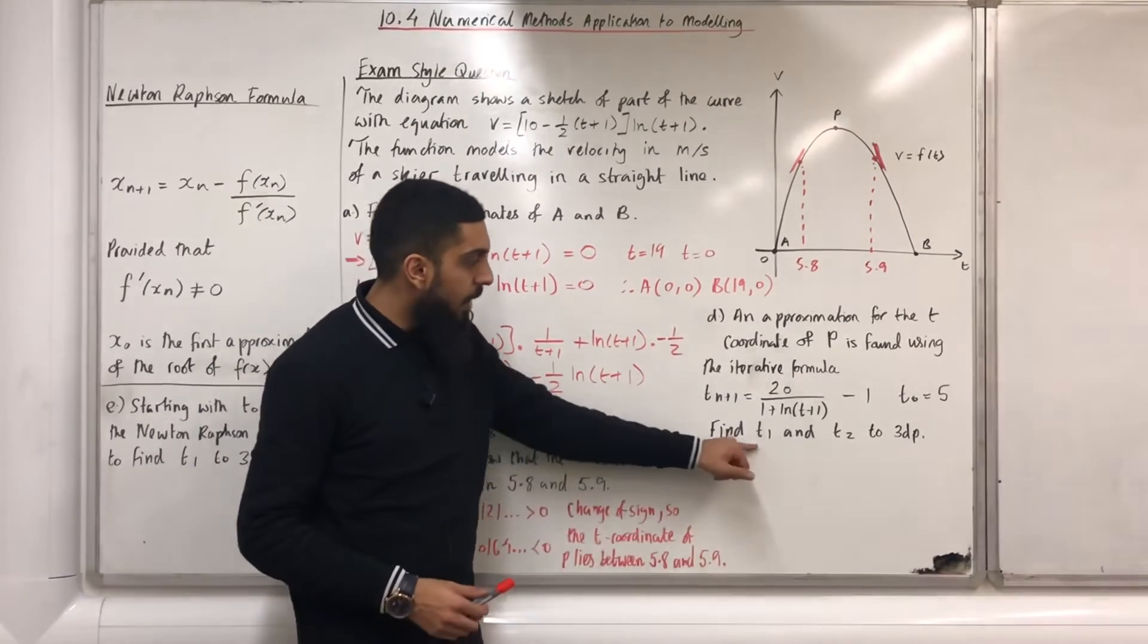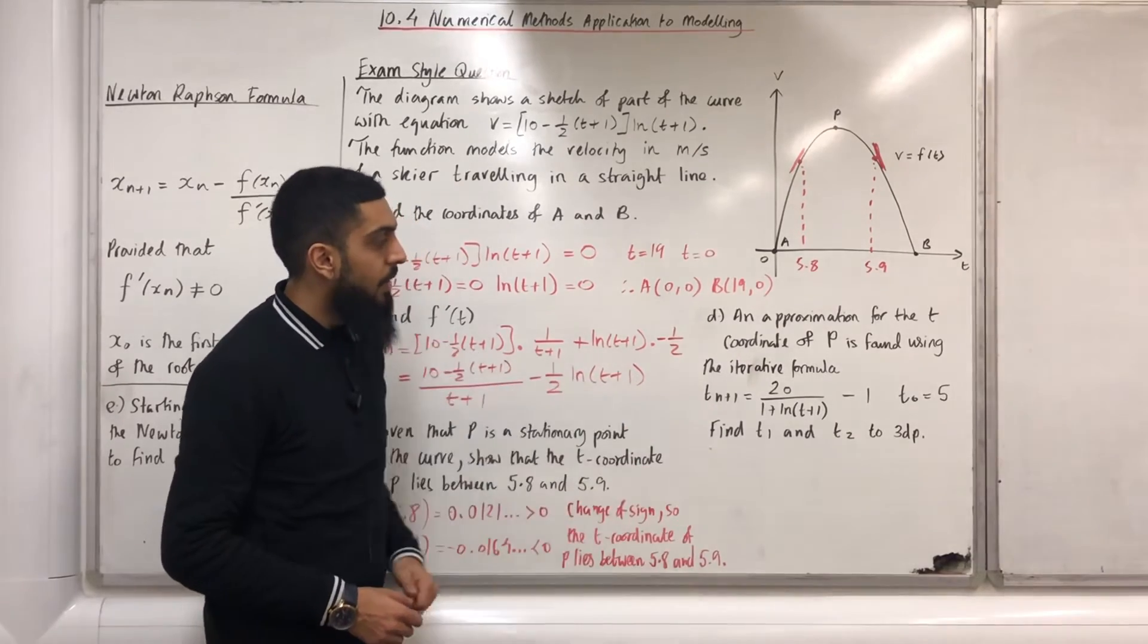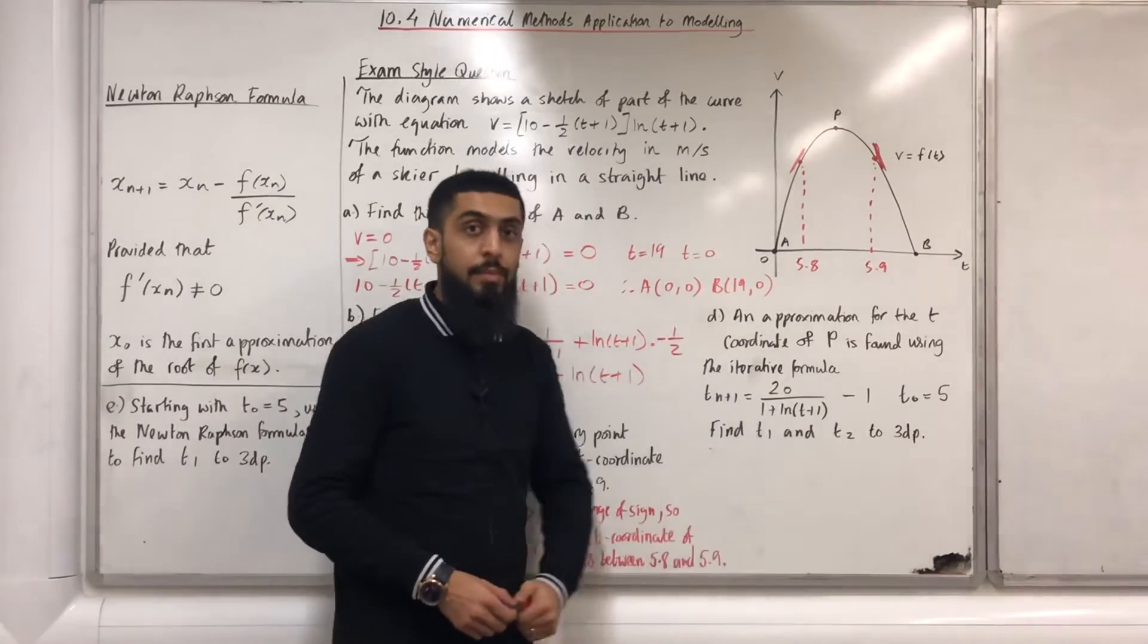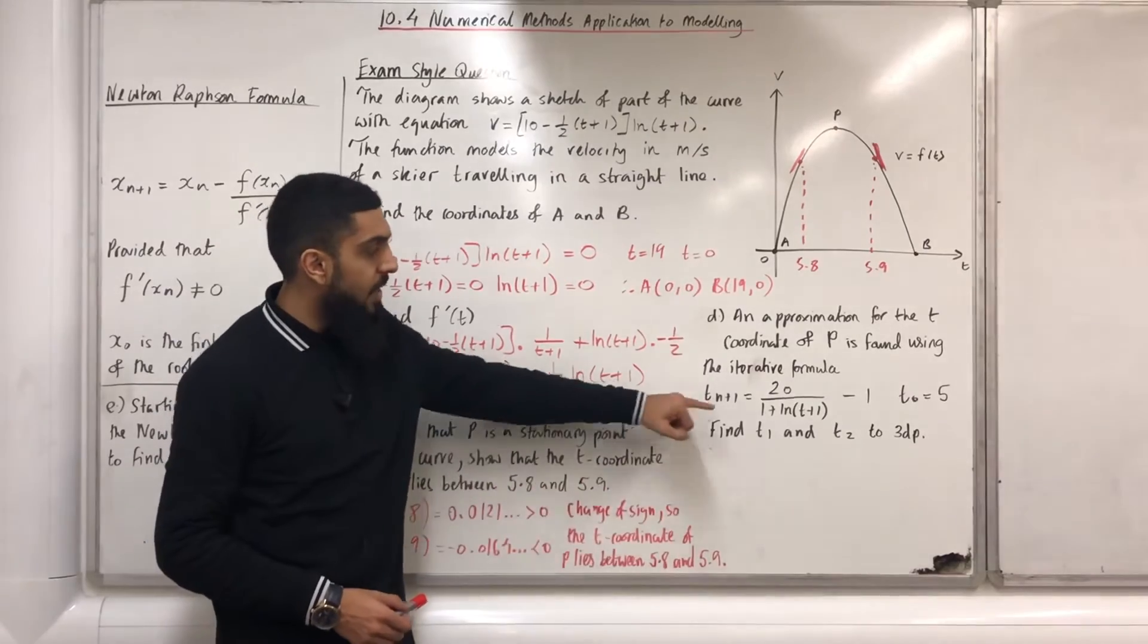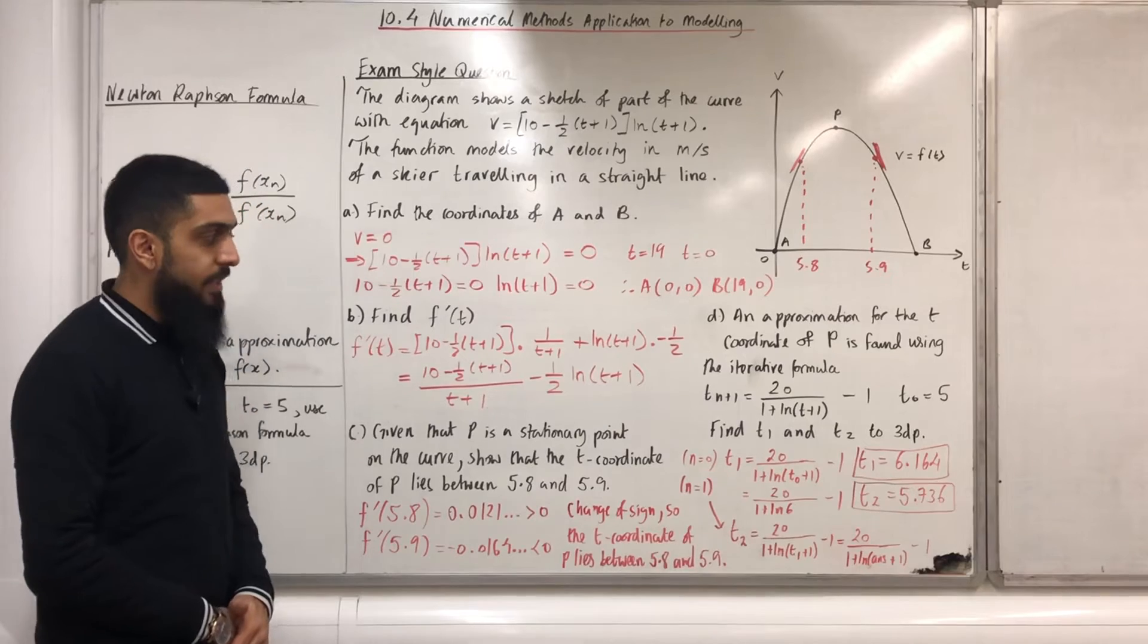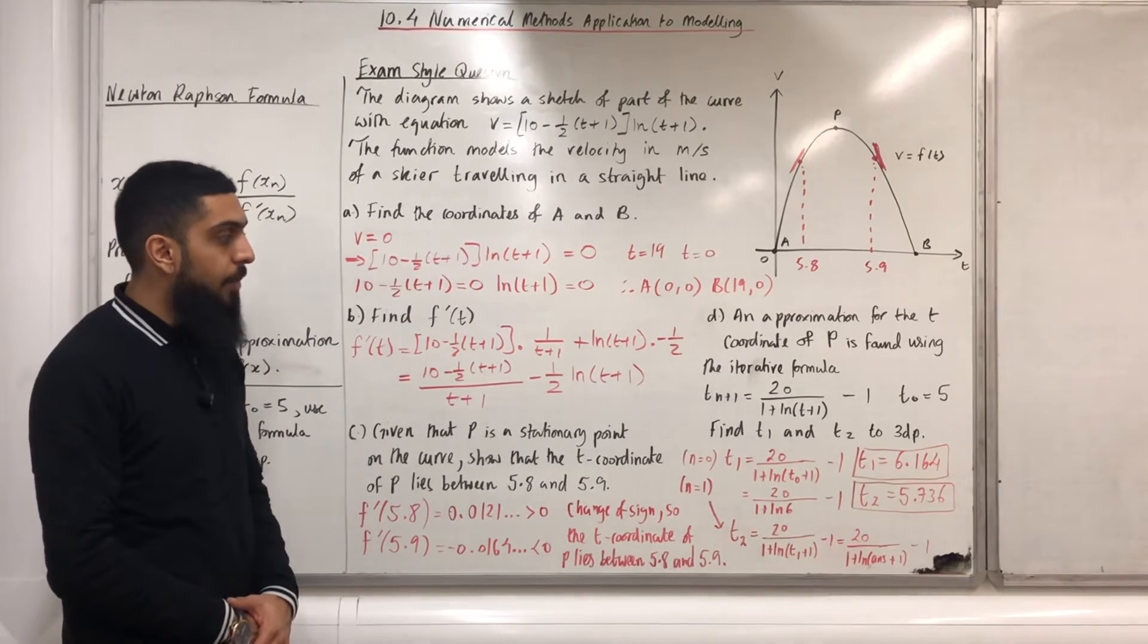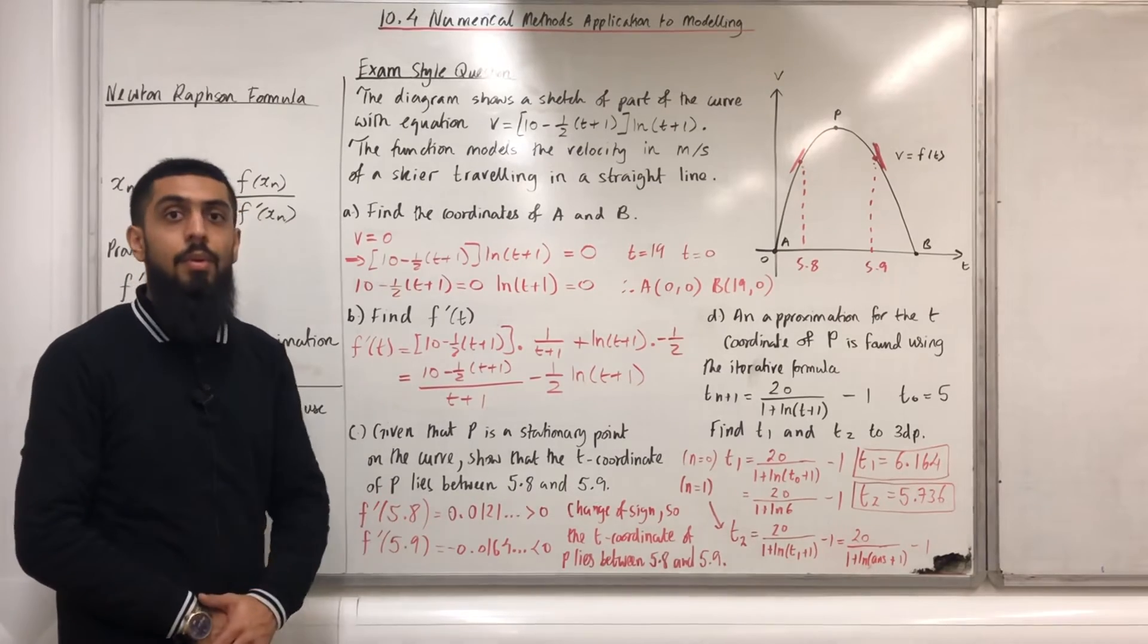To work out t_1, we have to substitute n = 0 into the iterative formula. To work out t_2, we have to substitute n = 1 into the iterative formula. After using my calculator, I get t_1 = 6.164 to three decimal places and t_2 = 5.736 to three decimal places.